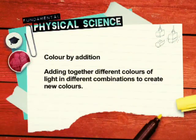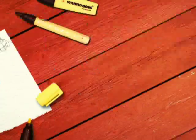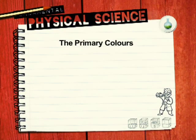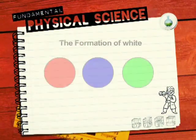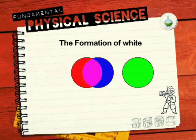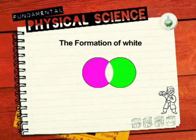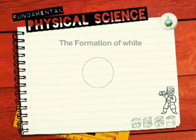Colour by addition means adding different colours of light in different combinations to create new colours. This process requires just three colours — red, blue and green — which are known as the primary colours. If all three primary colours are combined, then white light is formed.